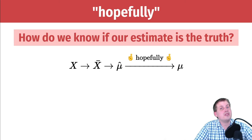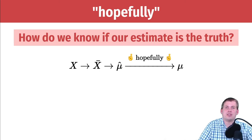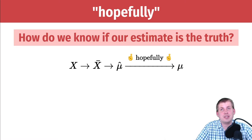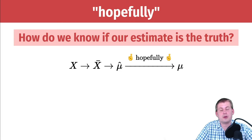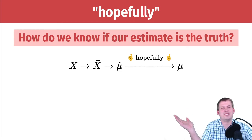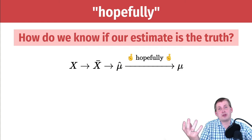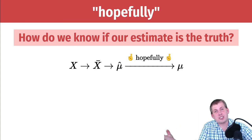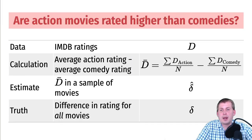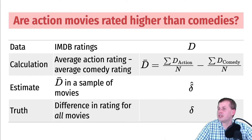How do we know if mu-hat really is mu — if it really is an actual effect that is out in the world? That is where p-values come into play. We'll use actual data from IMDB, the Internet Movie Database, on movie ratings. They have thousands of movies with average ratings — users can rate movies from one to ten. A rating of nine is a phenomenal movie; a rating of one is a junk movie. The question is: are action movies rated higher than comedies?